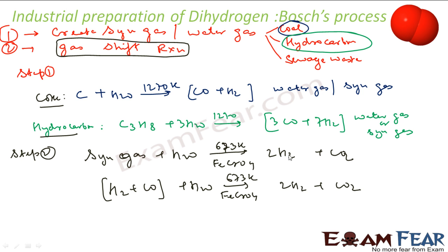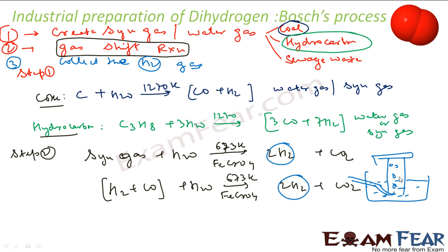So let me do the reaction here. For example, H2 and CO, this was my syngas, and I add water to it, 673 Kelvin and iron chromate. What you get is hydrogen gas and carbon dioxide. So once I have my hydrogen gas, I have to collect this. So the next step you can say is collect the hydrogen gas.